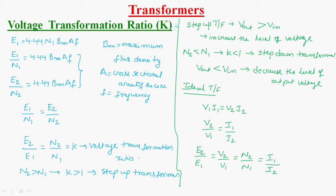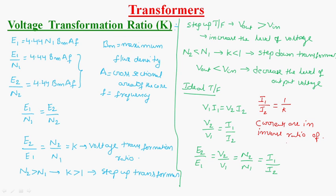Here, I1 by I2 is equal to 1 by K. Hence, the currents are in inverse ratio of the voltage transformation ratio.